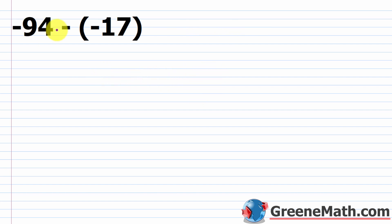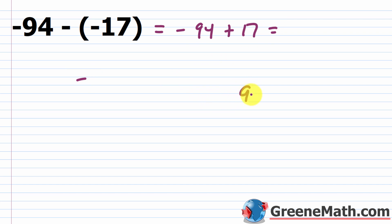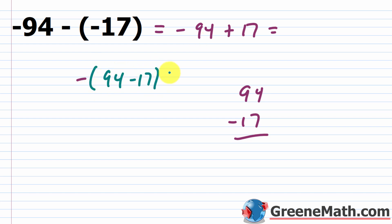What about negative 94 minus a negative 17? That becomes negative 94 plus 17. The sign of the number with the larger absolute value is negative. Then 94 minus 17: borrow to get 14 minus 7 is 7, and 8 minus 1 is 7, giving 77. So the final answer is negative 77.